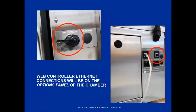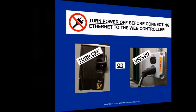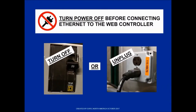If you have a web controller, you will have an Ethernet connection labeled 'web controller' on the options panel on the side of your chamber. To assure the web controller is detected and its location can be found, turn off all the power to the chamber before plugging in the controller Ethernet cord.